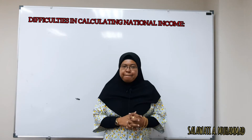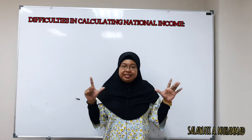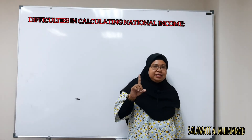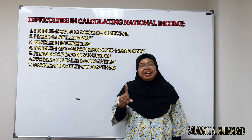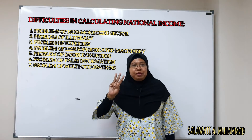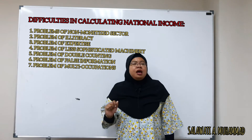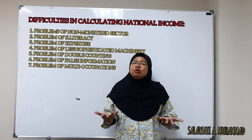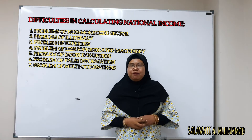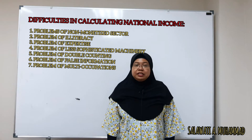The last segment for this subtopic is about difficulties in calculating national income. In total, we have seven difficulties. The first one is the problem of the non-monetized sector. Second, problem of illiteracy. Third, problem of expertise. Fourth, problem of less sophisticated machinery. Fifth, problems of double counting. Six, problems of false information. And seventh, problems of multi-occupation.